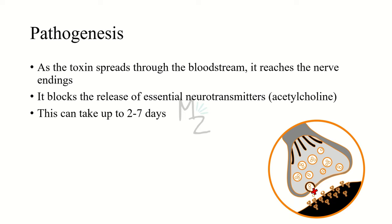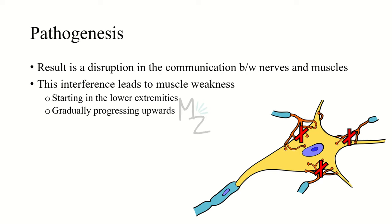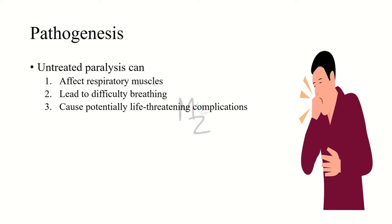Paralysis is mediated by a neurotoxin that blocks the release of acetylcholine at the neuromuscular junction. Acetylcholine is a neurotransmitter, and this action is similar to that of botulinum toxin. This toxin is made in the salivary gland of the tick and can take up to two to seven days to act. The result is a disruption in the communication between nerves and muscles, leading to muscle weakness starting in the lower extremities and gradually progressing upwards.